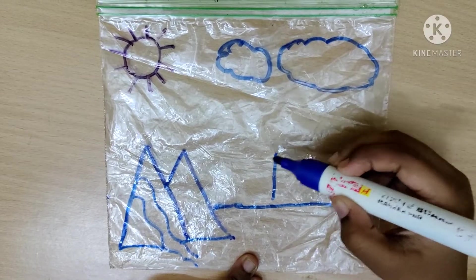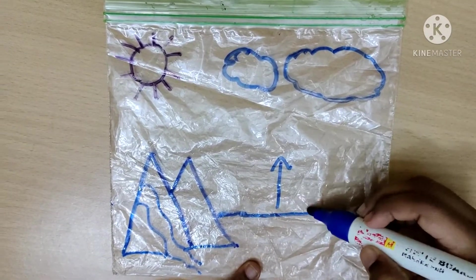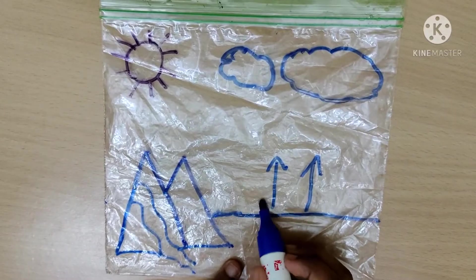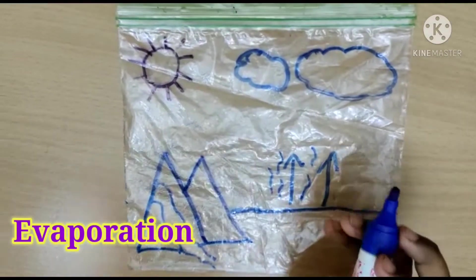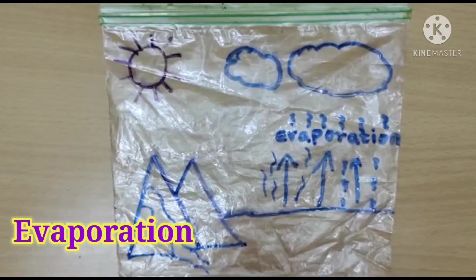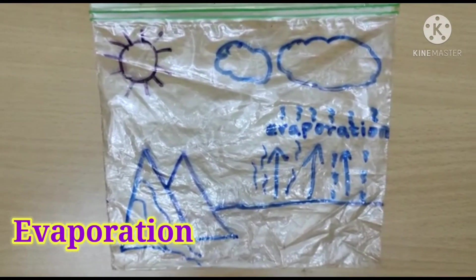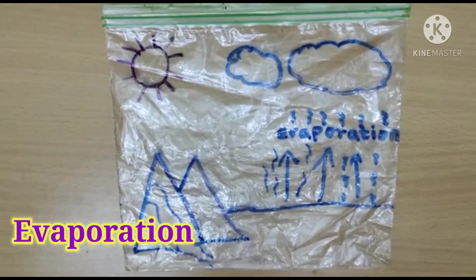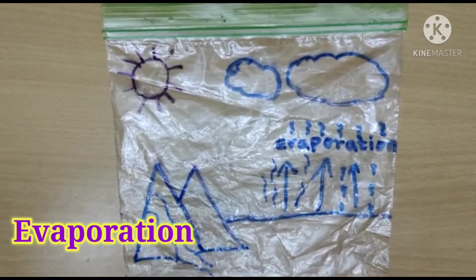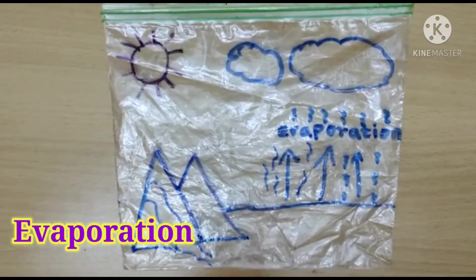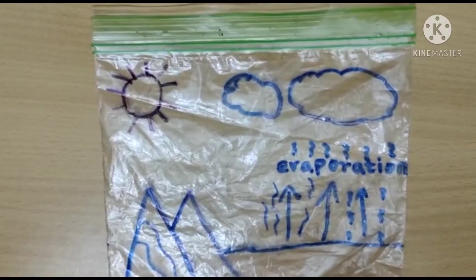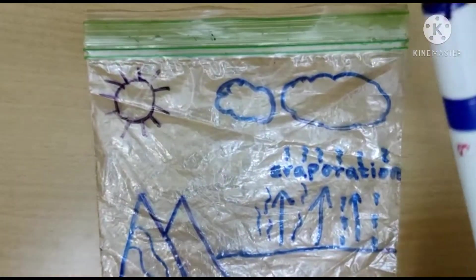The first stage in the water cycle is called evaporation. In this stage, the sun's heat will heat up the water and change the water into water vapor — it's called evaporation. Now the water vapor rises into the air.